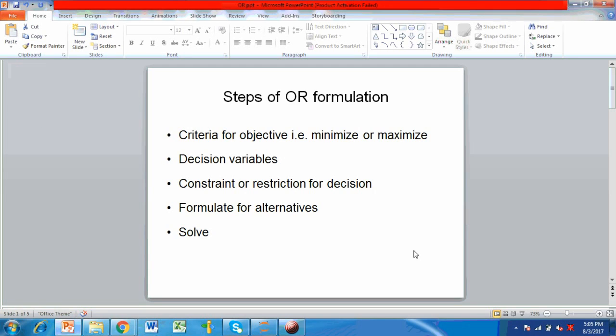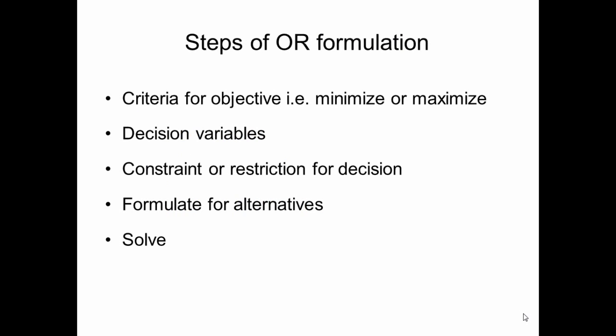The steps in OR formulation consist of formulating a problem for optimization by satisfying a set of constraints. First, identify the criteria for the objective which may require either to maximize or minimize. Second, identify the decision variables which would satisfy the constraints.